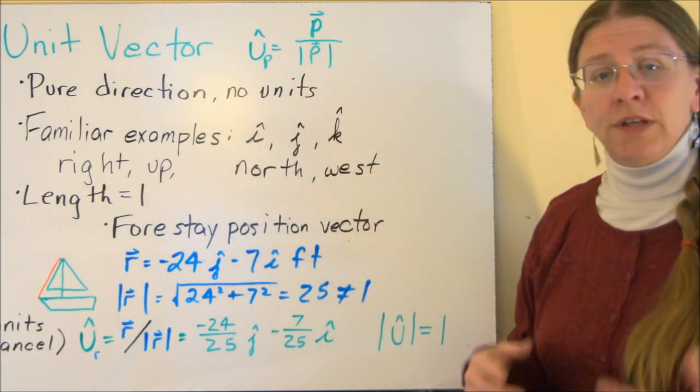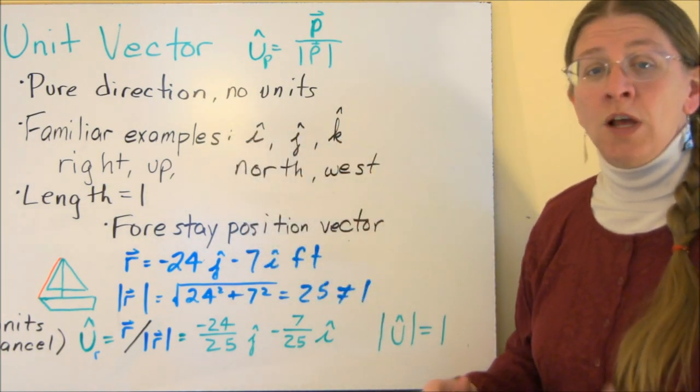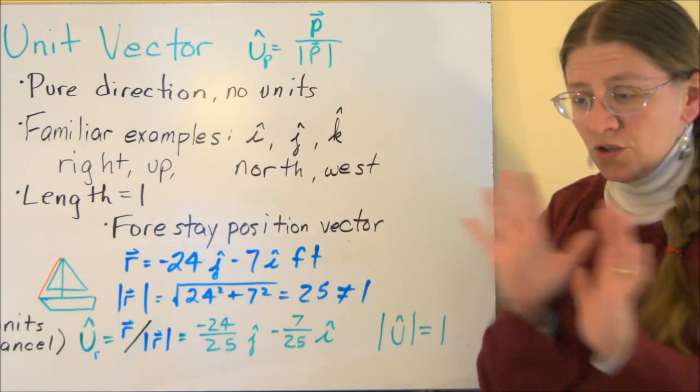Right, up, north, left. These are all examples of unit vectors. They're just directions.